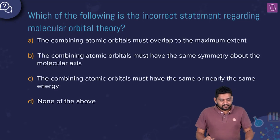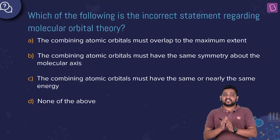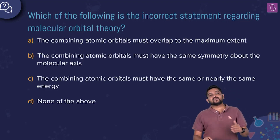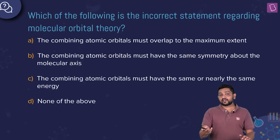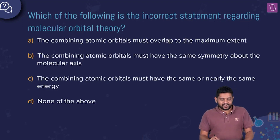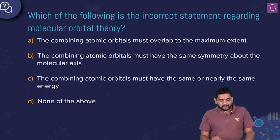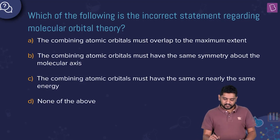This question asks which of the following is an incorrect statement regarding molecular orbital theory. In MOT, atomic orbitals combine to give molecular orbitals — two atomic orbitals from different atoms combine to give a bonding and an anti-bonding molecular orbital. Reading the options: the combining atomic orbitals must overlap to the maximum extent — this is true. The combining atomic orbitals must have the same symmetry about the molecular axis — this is also true.